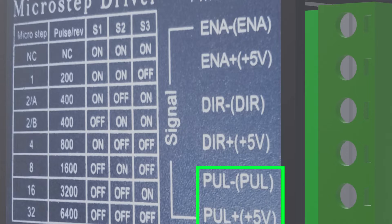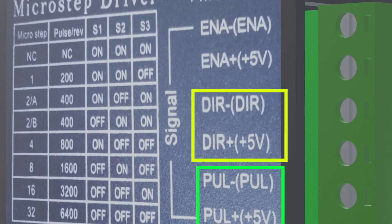Then we have the signal connections — the pulse, which has a negative pulse and a positive pulse of five volts. The connection of the pulse will depend on the type of output of our PLC, be it negative or positive. In this case our PLC has a negative pulse output. In the same way for the direction — the change of rotation of the motor — the positive direction will join the positive pulse at the 24 volts of the PLC.